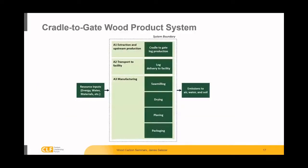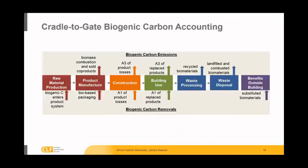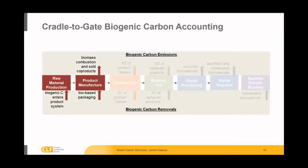The cradle-to-gate scope is what the LCAs and EPDs for the wood products industry cover. You can see here the various processes that a wood product undergoes in these EPDs — from the extraction of materials, delivery to the facility, and the various processes at the manufacturing facility. The EPDs and LCAs produced by the wood products industry are cradle-to-gate, really focused on these two processes and the transportation that connects them.